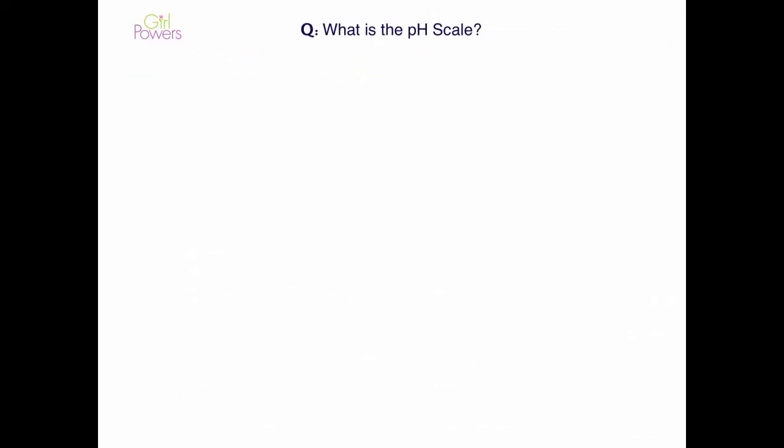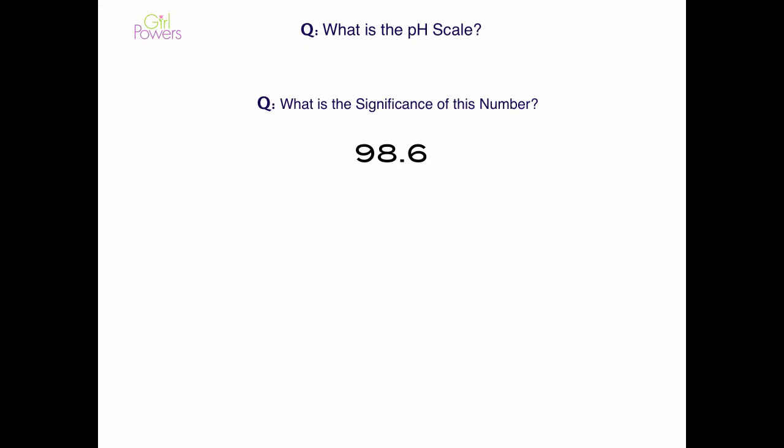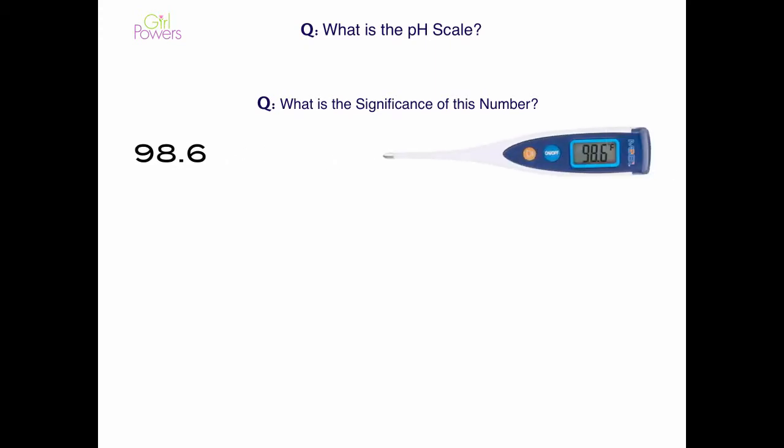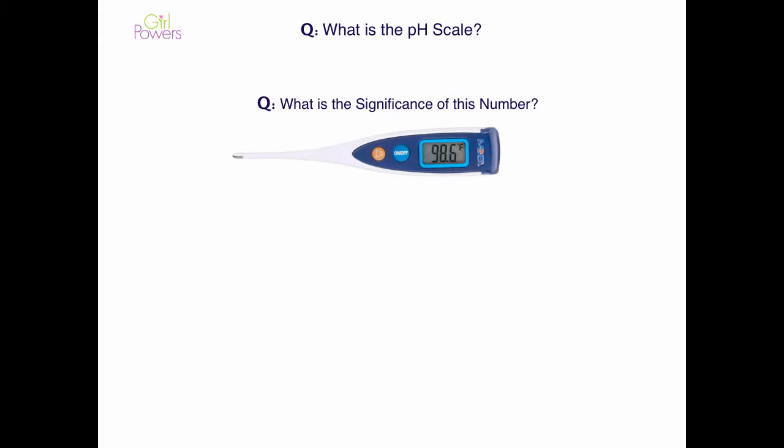So what is the pH scale? One of the easiest ways to understand this is to ask: what is the significance of 98.6? And if you thought that's my ideal body temperature, you're correct. Note that it's not necessarily 98.5 or 98.7 — it's 98.6, so it's quite specific.